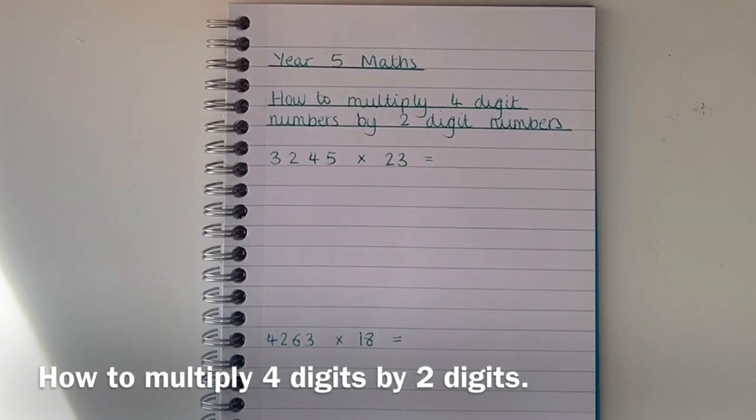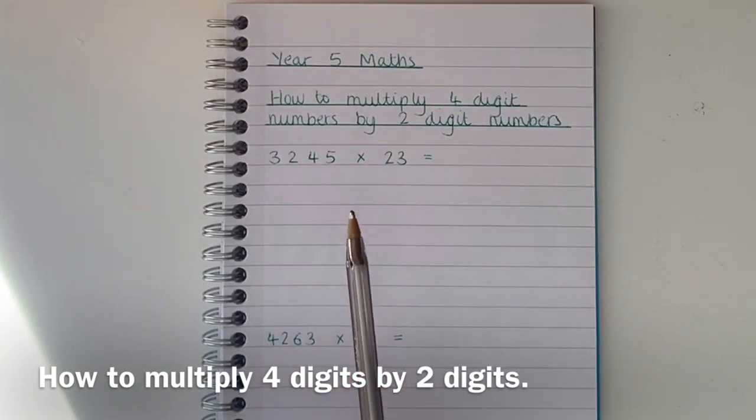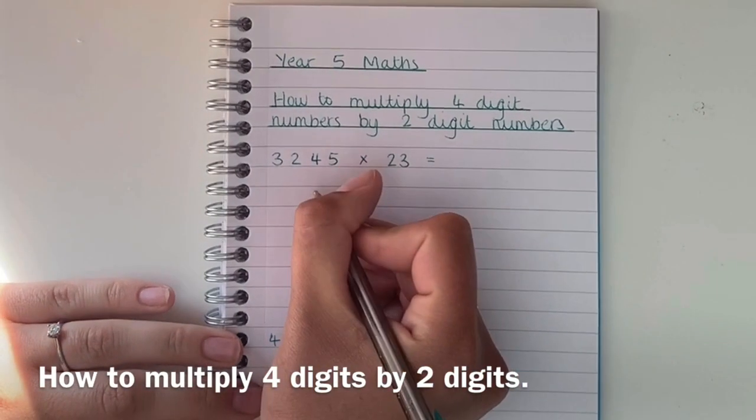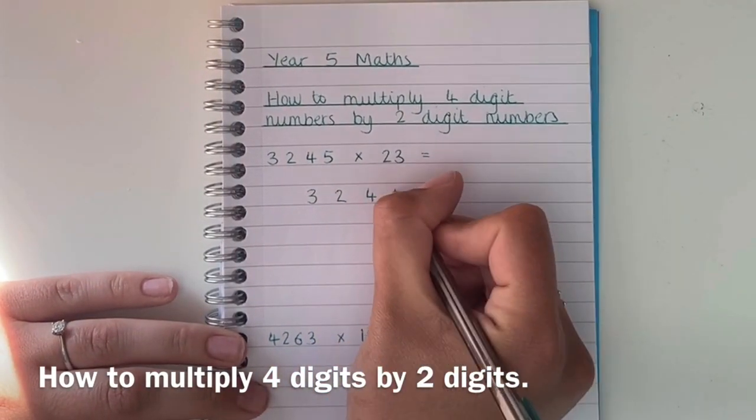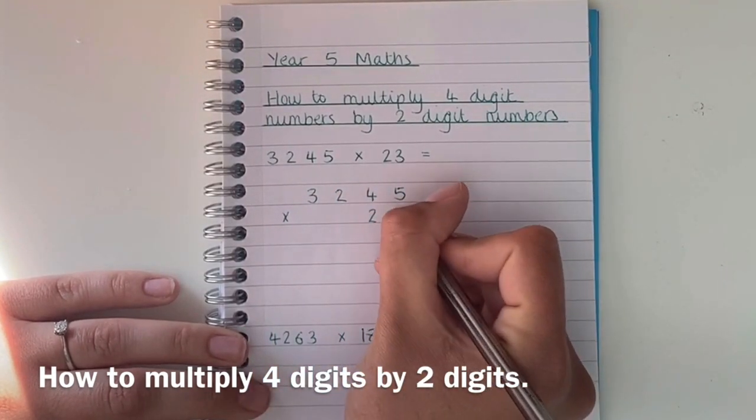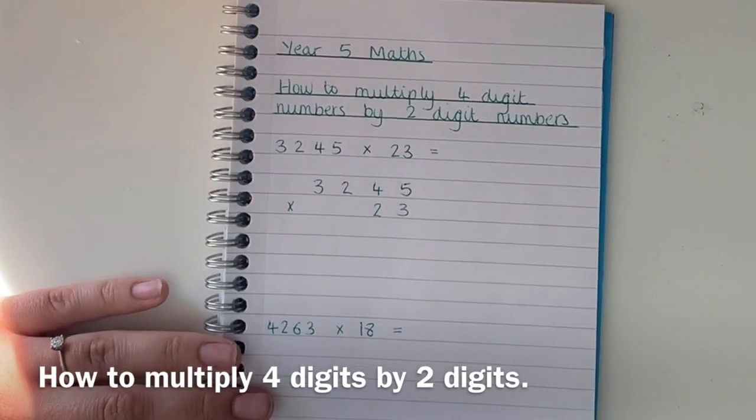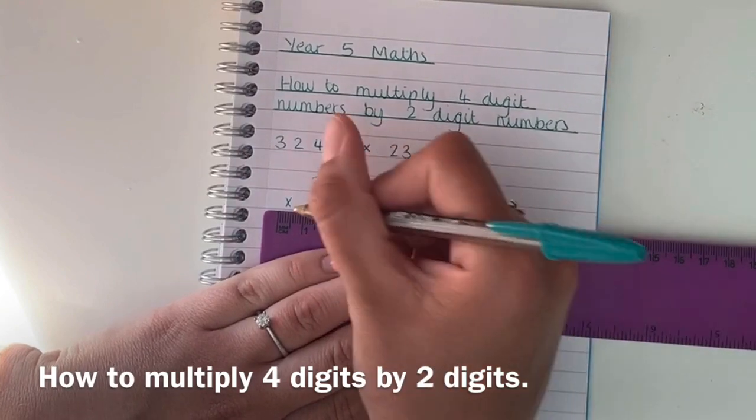So I'm going to start with 3245 multiplied by 23. Firstly we need to set it out in the column way like we normally would for multiplying numbers. Hopefully you'd be using your squared paper but you can use lined paper, just make sure it's set out properly.